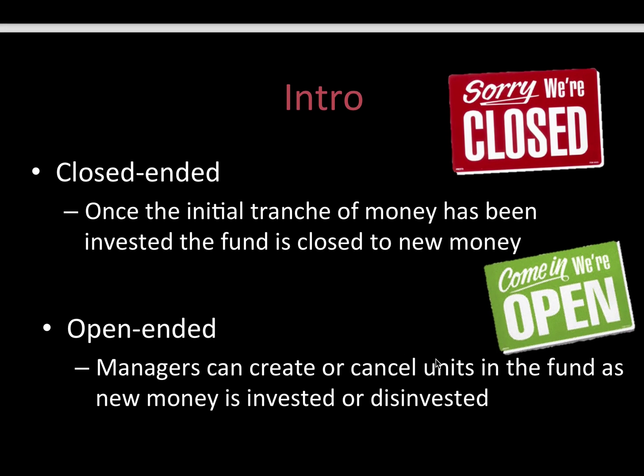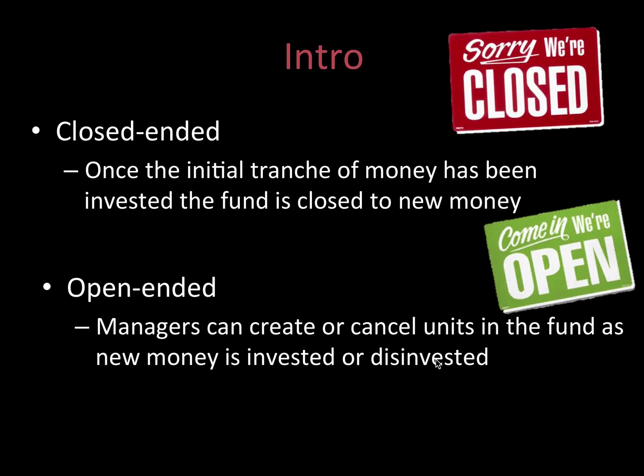There are two types of Collective Investment Schemes. The one is close-ended and the other is open-ended. Close-ended means that once money has been raised, the fund then closes. An open-ended scheme is where managers can create or cancel units in the fund as new money is invested or withdrawn.